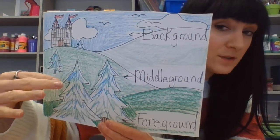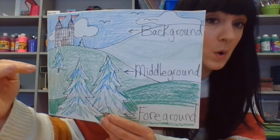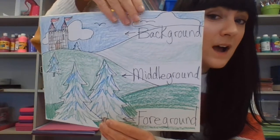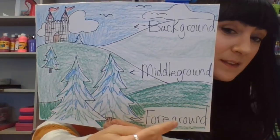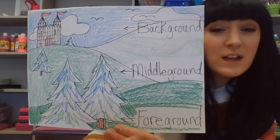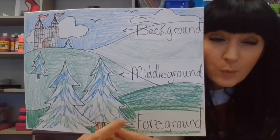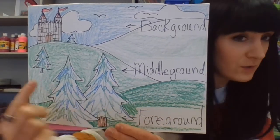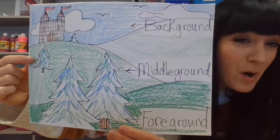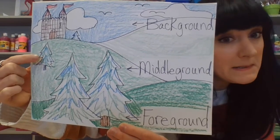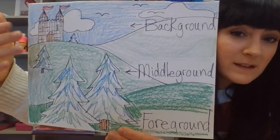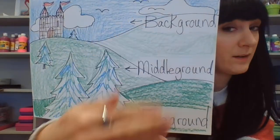Our middle ground is right in the middle of the page, and this is always horizontally — not vertically. We don't have background, middle ground, foreground going up and down. We have our background at the top, middle ground in the middle, and that foreground is what's closest to you in the picture. You can remember the word foreground by thinking of front or first. These trees are in your foreground. Behind them, these smaller pine trees are in the middle ground, and this one's in the background, far away.